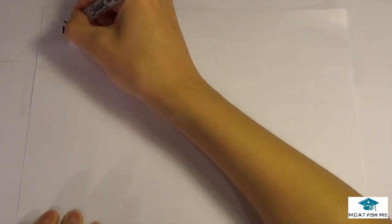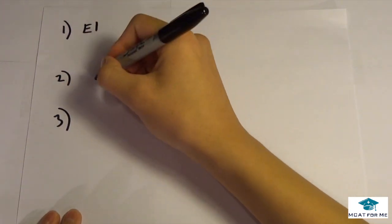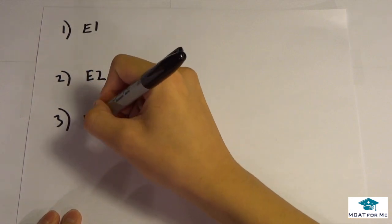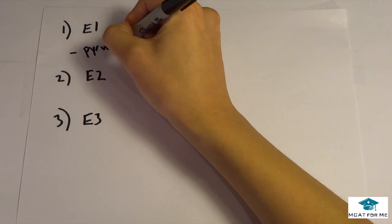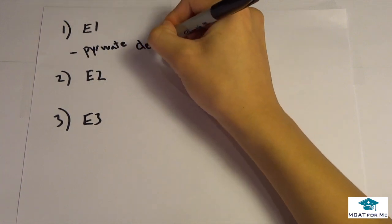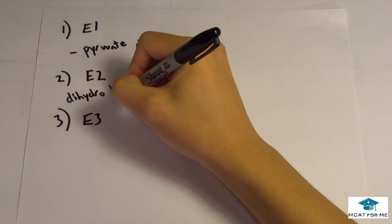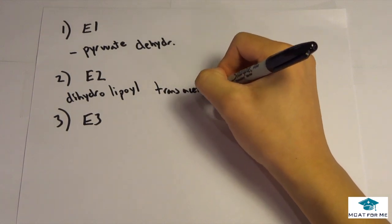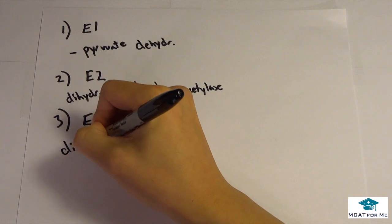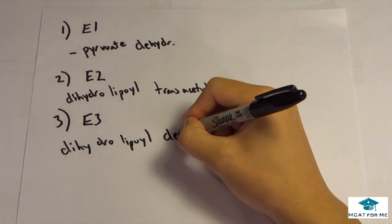So the PDC has three different parts to it. So it's divided into E1, E2 and E3 which are all different parts to the PDC. And so the first one is called pyruvate dehydrogenase. The second one is called dihydrolipoyl transacetylase. And the last one is dihydrolipoyl dehydrogenase as well.